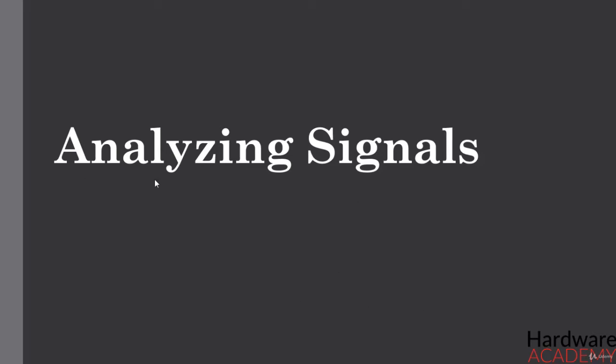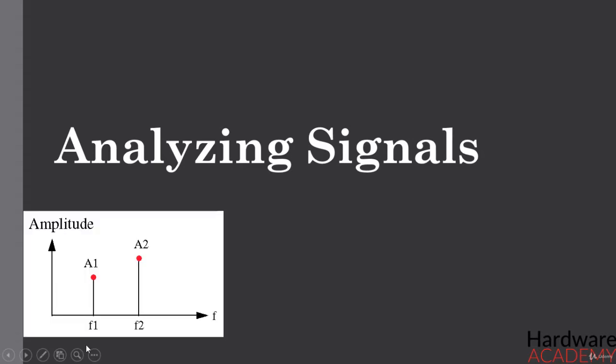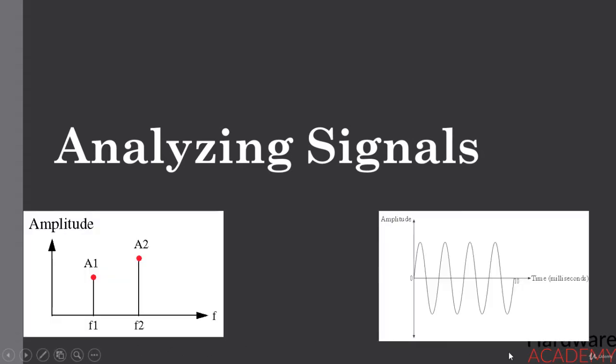In order to analyze a signal, it has to be represented first. This representation in communication systems is of two types: frequency domain representation and time domain representation.